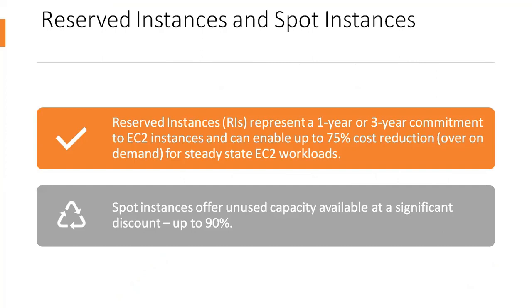A first initial consideration around cost should be the purchasing model for any EC2 instances. Reserved instances represent a one-year or three-year commitment to EC2 instances and can enable up to 75% cost reduction over on-demand for steady-state EC2 workloads. They are ideal for 24/7 workloads that must be continually in operation. An application requires no modifications to make use of RIs.